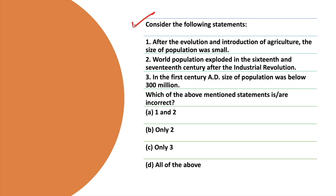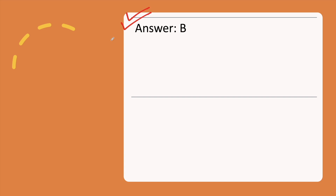The next question: Consider the following statements. Statement 1: After the evolution and introduction of agriculture, the size of population was small. Statement 2: World population exploded in the 16th and 17th century after the industrial revolution. Statement 3: In the 1st century AD, the size of population was below 300 million. Which of the above statements are incorrect? Take a moment and answer carefully. The correct answer is option B.